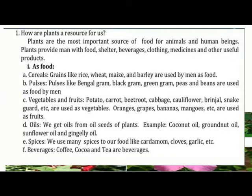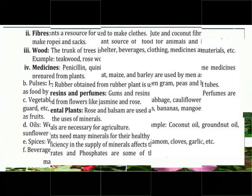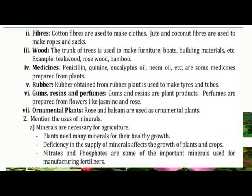We get oil from seeds of plants — coconut oil, groundnut oil, sunflower oil and gingelly oil. We use many spices in our food like cardamom, cloves, garlic, etc. Beverages: Coffee, cocoa and tea are beverages. Cotton fibers are used to make clothes. Jute and coconut fibers are used to make rope and sack.